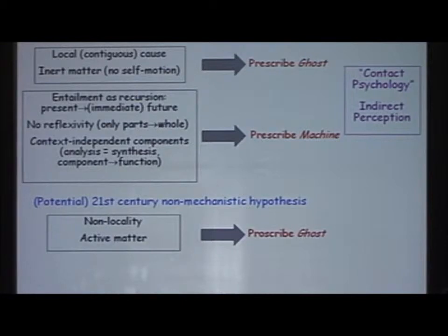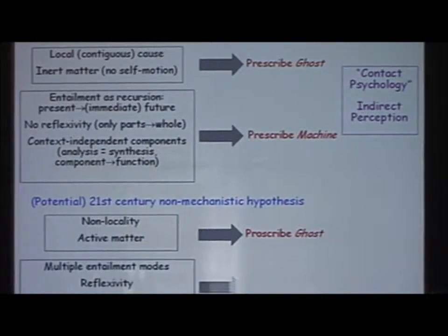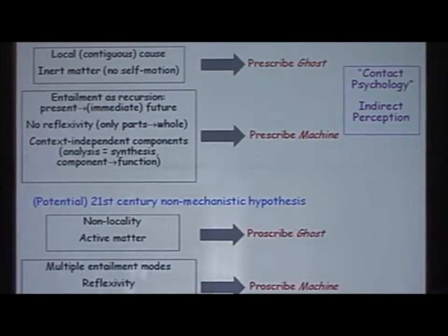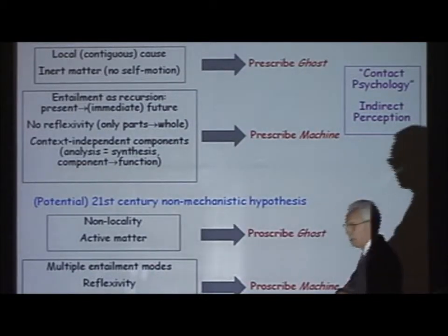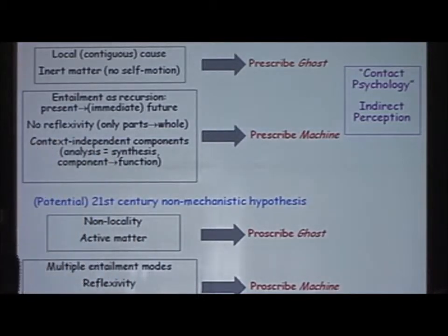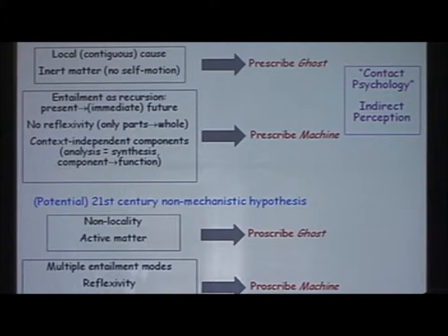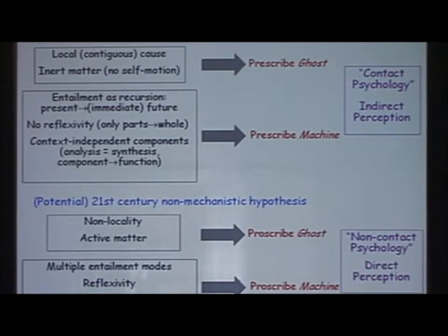Non-locality and active matter. I would like to claim that these notions beginning to show up and gain force in the 20th century proscribe ghost. And I would like to think that multiple entailment modes, the acceptance of reflexivity and the fact of context dependent components I think means to proscribe machine. And in this discourse by the way, as I have given this sort of talk around the United States I say that the real challenge here is the machine challenge. I think we're sort of happy with the idea of getting rid of the ghost and the idea of getting rid of the machine is a whole different story. What does this yield? It yields what we might call non-contact psychology. And I think in here sits direct perception. To put it another way if Gibson's hypothesis of direct perception is going to have any hope I think it only has a hope in this framework.